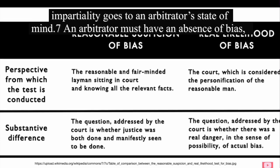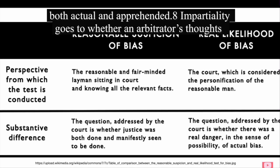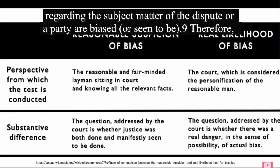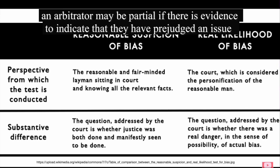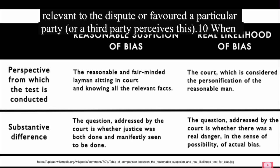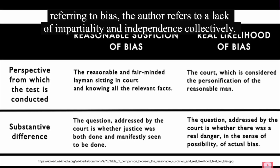An arbitrator must have an absence of bias, both actual and apprehended. Impartiality goes to whether an arbitrator's thoughts regarding the subject matter of the dispute or a party are biased or seen to be. Therefore, an arbitrator may be partial if there is evidence to indicate that they have prejudged an issue relevant to the dispute, or favoured a particular party, or a third party perceives this. When referring to bias, the author refers to a lack of impartiality and independence collectively.